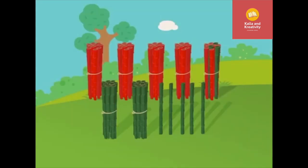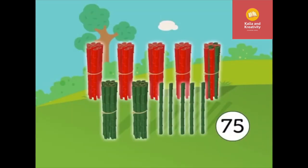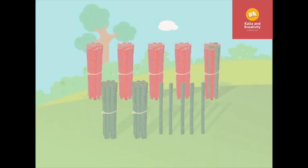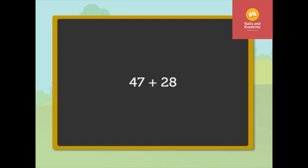Thus, we say that there are seventy-five bamboo sticks in all. Now, as you know, instead of counting the bamboo sticks, we can directly add the numbers forty-seven and twenty-eight. Let's look at the process of addition of these numbers.